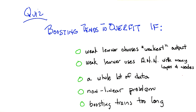Here's possibility number one: boosting will tend to overfit if the weak learner that it's boosting over always chooses the weakest output. That is, among all the hypotheses that it finds that do better than chance over the training data with whatever given distribution, it will always pick the one that is still nonetheless closest to chance while still being better. Will that tend to make boosting overfit? Yes.